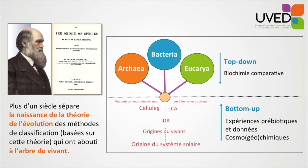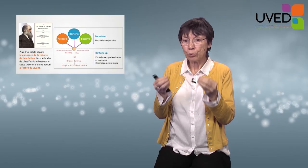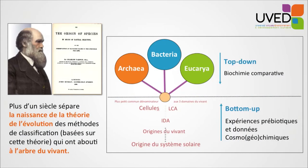Thanks to a top-down analysis, we compare in a phylogenetic fashion — using bioinformatics tools — all macromolecules and all sequences found in all three domains. We can come down to the smallest common denominator, also called the Last Common Ancestor, or LUCA, which stands for Last Universal Common Ancestor, bringing together all traits common to the three domains of life. With LUCA, we hope to go back in time even further to reach the very origin of life.